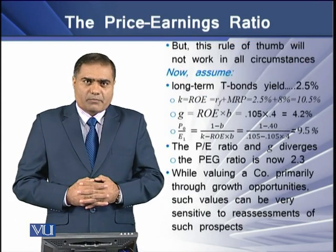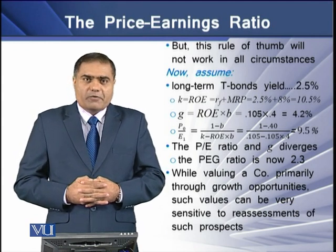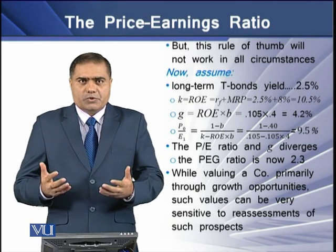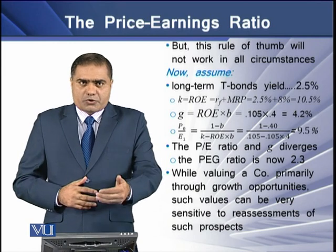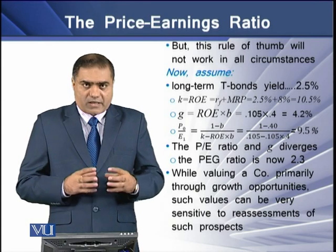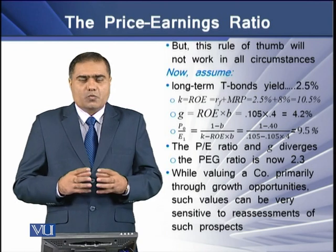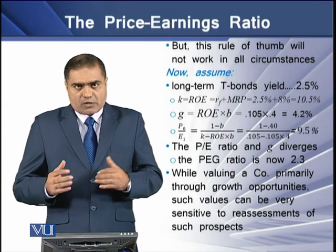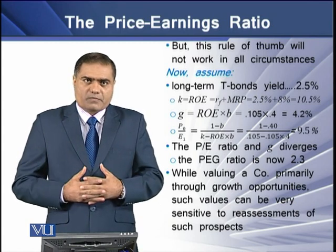However, this rule of thumb may not work under certain cases. For example, if long-term T-bonds yield 2.5% and k = ROE = risk-free rate + market risk premium = 10.5%, then g = 4.2% and the P/E = 9.5. Here the P/E and g are diverging, giving a PEG ratio of 2.3. This means that valuing a company primarily through growth opportunities can be very sensitive to reassessment of growth prospects.